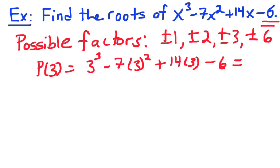So if we do the math on this, we have 27, minus 3 squared is 9, times 7 is 63. 14 times 3 is 42, I do believe. And then subtract 6. So we do the math on all that. Of course, we end up with 0.